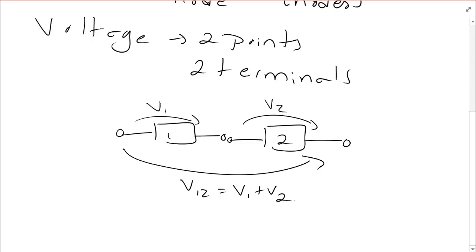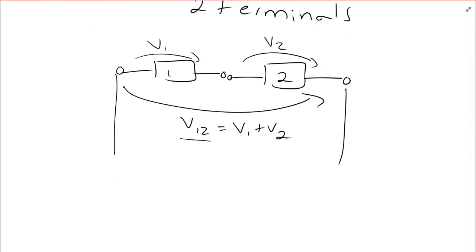Which terminals did I use to compute V12? It's extremely convenient to say that one of these terminals will just be given a value of zero. I say this is zero volts. And then I can say this is V12 volts above zero or below. It depends on if it's positive or negative.